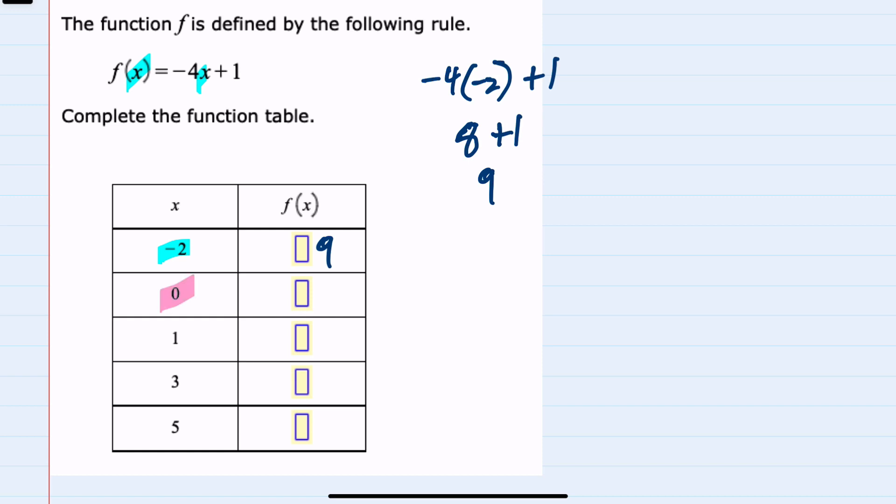Moving to 0, to find f(0) I would replace x with 0, leaving me -4 times 0 plus 1. Multiplication first.